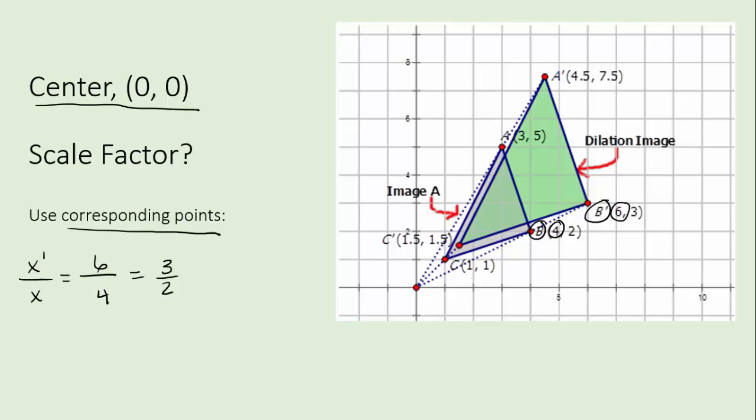But we could do it with one other point. Let's just pick something else so that you understand this. How about C and C prime? So we got to do C prime first. Let's look at the X's. You could use the Y's. It doesn't matter. So I get 1.5 is over 1.